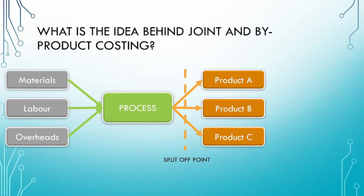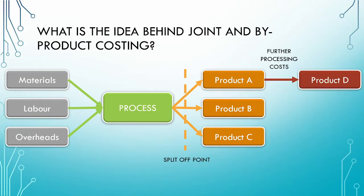After the split-off point, where the products are separately identifiable, the products may be subject to further processing. These further processing costs can be traced to the individual products to which they relate.